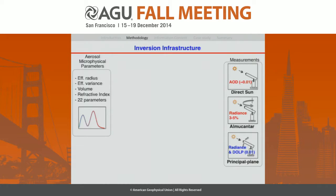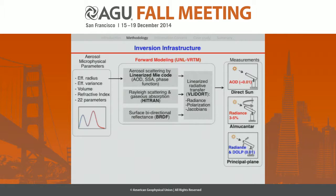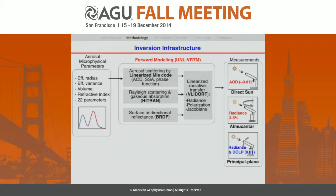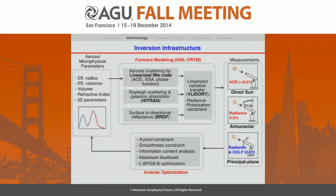To build the retrieval algorithm we need to develop a forward model, which we have been developing for the last two years. We call it ULVRTM — a coupled linearized Mie code and linearized vector radiative transfer model. With this we can directly calculate radiance and polarization from aerosol parameters and also calculate the Jacobian of those measurements with respect to those parameters. We then combine maximum likelihood inversion optimization with a priori constraints and smoothness constraints to obtain the inversion.